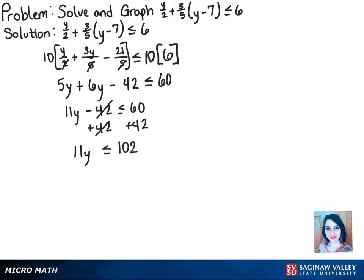Once those cancel, we have 11y is less than or equal to 102, and then we divide both sides by 11 so that y is alone, which leaves us with y is less than or equal to 102 over 11.